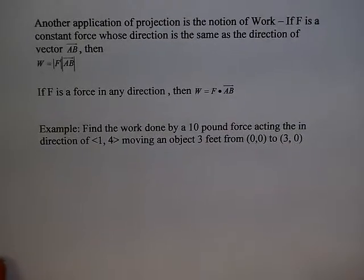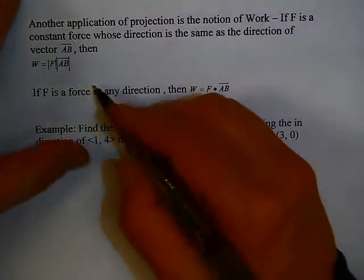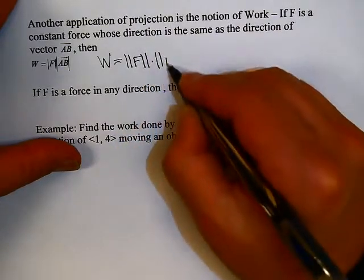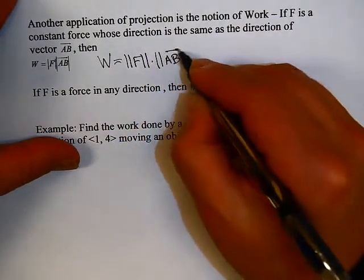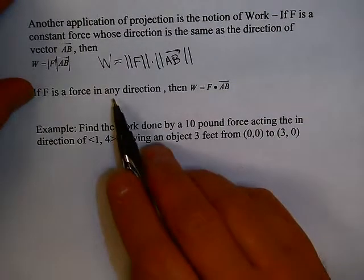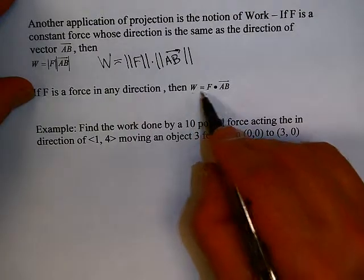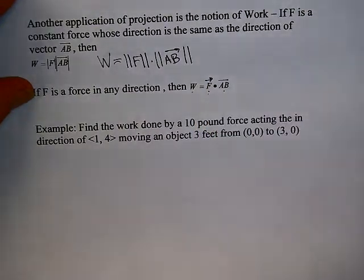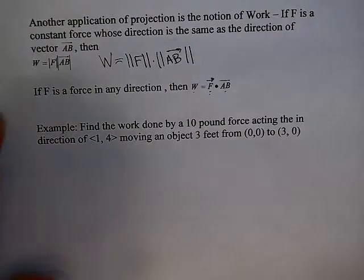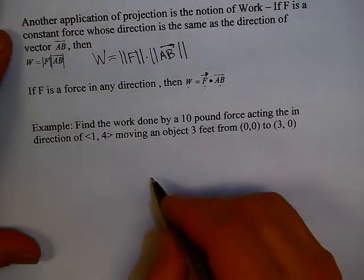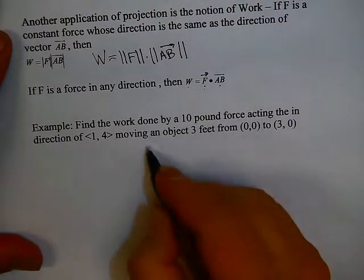Another application useful in physics is the notion of work. If F is a constant force whose direction is the same as direction AB, then work is defined as the magnitude of force times the magnitude of the displacement. If F is a force in any direction, then work equals F dot AB. Let's find the work done by a 10-pound force acting in the direction of (1, 4), moving an object 3 feet from (0, 0) to (3, 0).